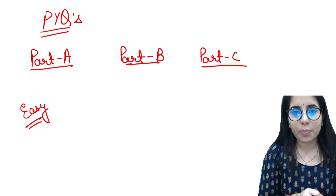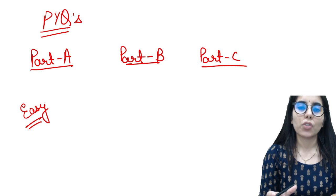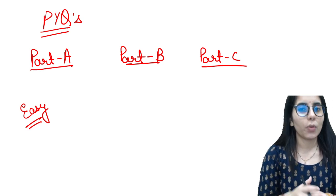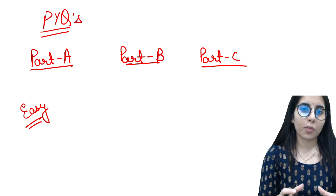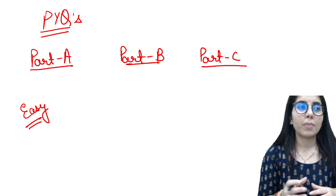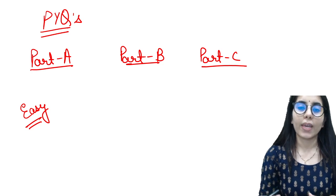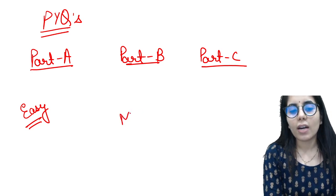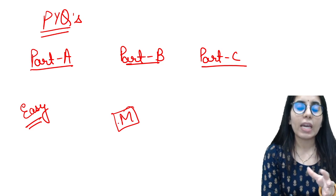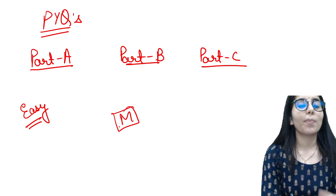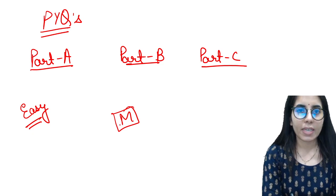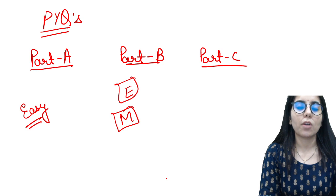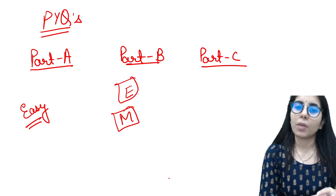In Part B, many questions were formula-based. If you had prepared those topics, Part B would look quite easy. However, if you missed some formulas or hadn't covered certain topics, those questions would feel difficult. So we can consider Part B as moderate overall — easy for well-prepared students, moderate for others depending on their preparation.